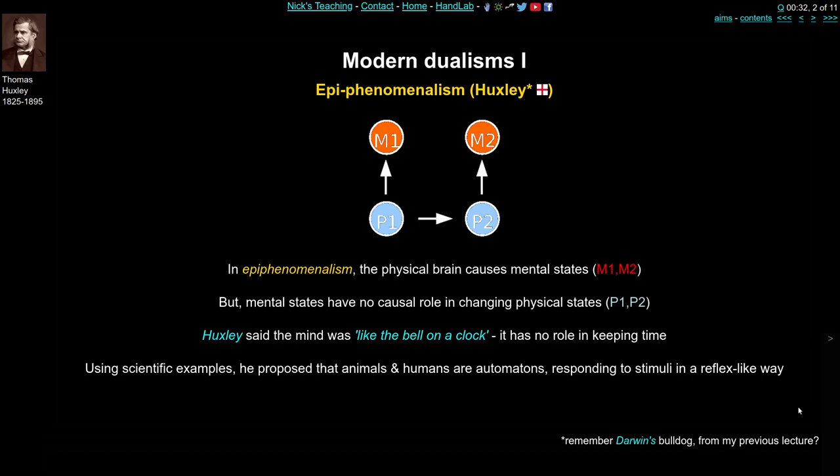Huxley illustrated his idea of epiphenomenalism by saying that the mind was essentially like the bell on a clock. The bell has no role at all in keeping time — the clock will work regardless of whether the bell is working or even heard. Time is kept by the clock but the bell does nothing. It's just a phenomenon, a thing which sits on top of the clock itself — an epiphenomenon. Epi means above or over, so the mind is an epiphenomenon of the body.